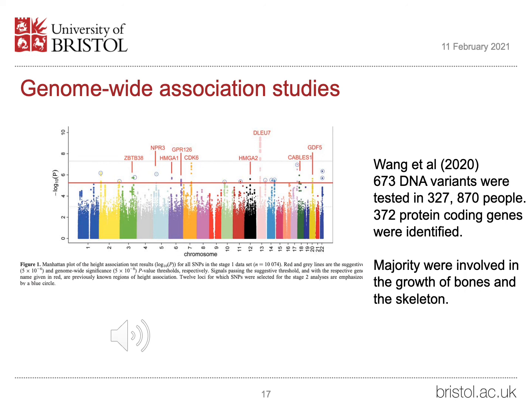There are about seven or eight different regions of the genome which show a statistically significant association with height. A more recent study in 2020 suggested that there were about 372 protein-coding genes identified as being significant in a large study of about three and a quarter thousand people. Overall, about 673 DNA variants were tested, so just over half were in protein-coding regions, and the majority of these genes seem to be involved in the growth of bones and the skeleton.